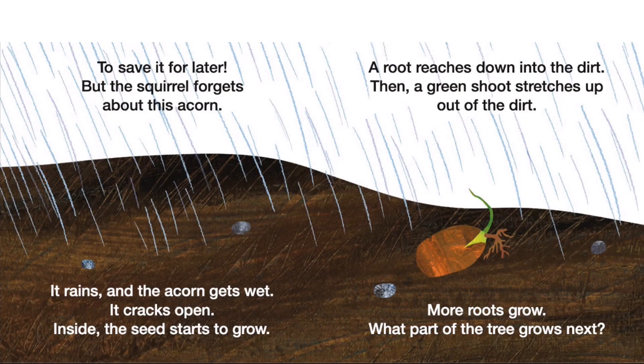Just to save it for later! But the squirrel forgets about this acorn. It rains, and the acorn gets wet. It cracks open. Inside, the seed starts to grow — a root reaches down into the dirt, then a green shoot stretches up out of the dirt. More roots grow. What part of the tree grows next?